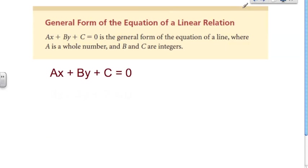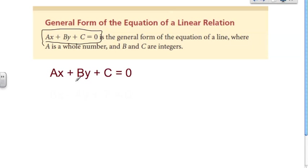So if that wasn't confusing enough, we're going to give you a fourth form to remember. Most of these are going to be on your provincial package so you don't have to memorize them, but you do have to bring your provincial package for the test. This fourth form is: ax plus by plus c is equal to zero. Here x and y are points on the line, and a, b, and c are going to be numerical values.